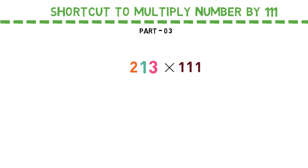Let's say if I'm supposed to multiply this by triple one, this is very simple. Write down the unit digit as it is. Here we have 3, so I'm writing the 3 as it is.